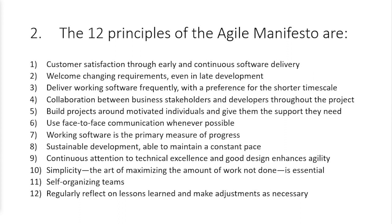Sustainable development — maintain a constant pace, not necessarily a fast pace. Number nine: continuous attention to technical excellence and good design enhances agility. Number ten: simplicity — the art of maximizing the amount of work you didn't do. Don't do busy work; if there's a way to deliver 100K value by doing smaller work, do the smaller work. Number eleven: self-organizing teams get the best results. Number twelve: regularly reflect on lessons learned through retrospectives and tune and adjust accordingly. That covers the 12 principles of the Agile Manifesto.